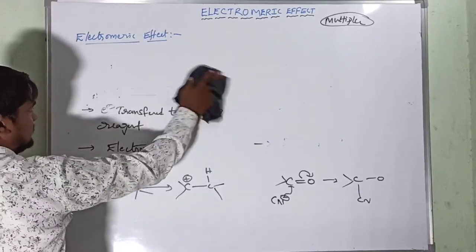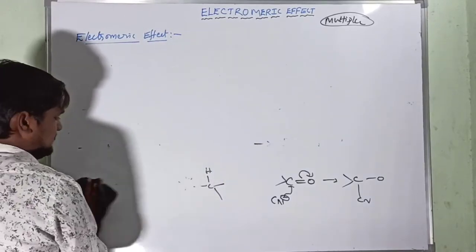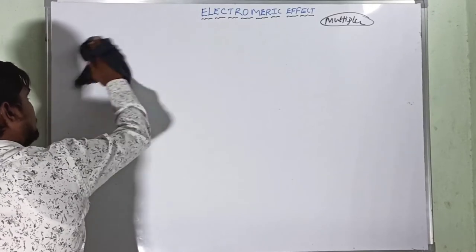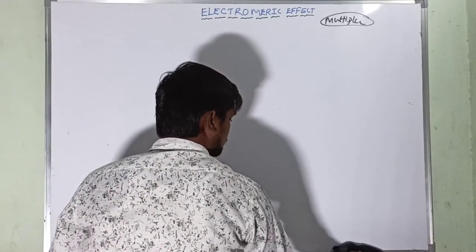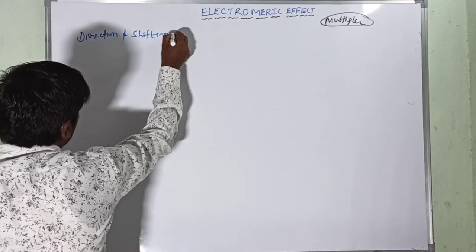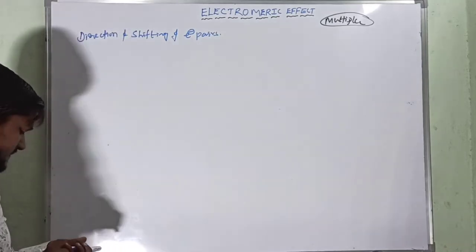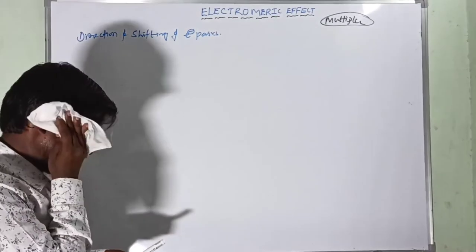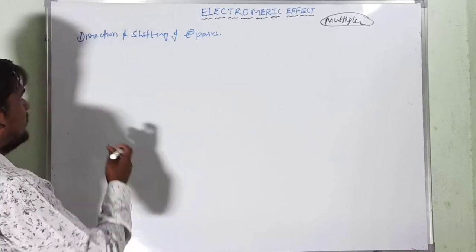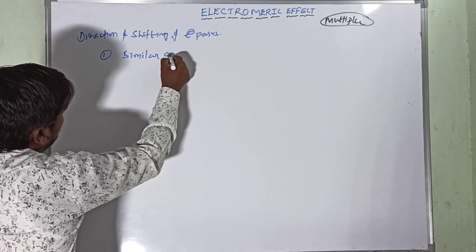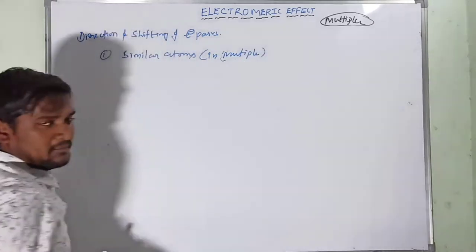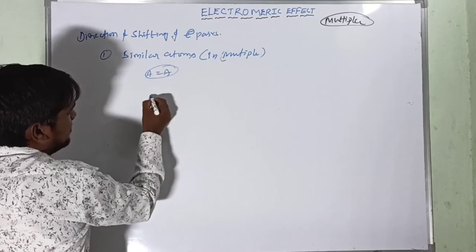Now let us discuss the direction of shifting of electrons. Two cases arise. Case one: similar atoms in multiple bonds — for example, a C=C double bond (unsaturated compound). In the presence of any reagent like H⁺, electrons can shift to the right side or left side.